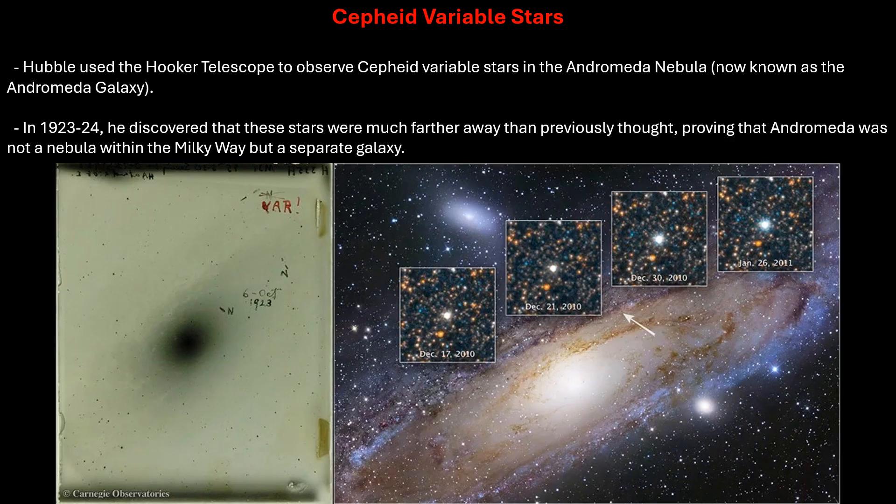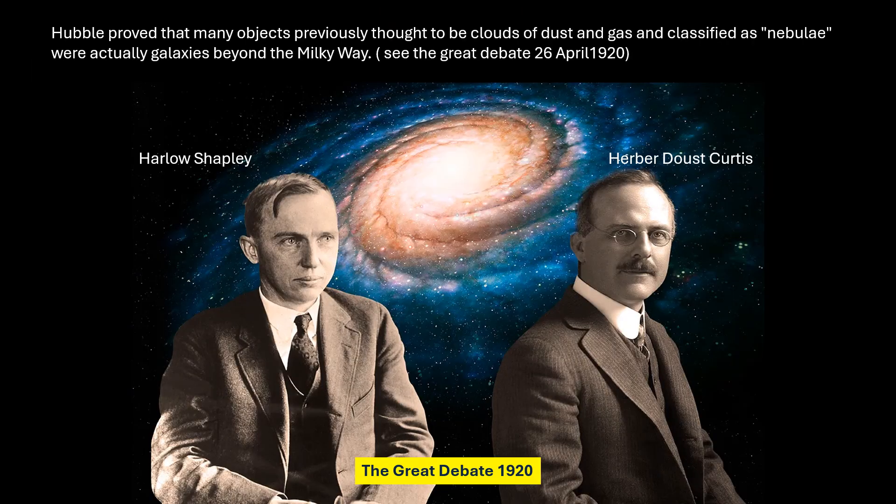Hubble used the Hooker Telescope to observe Cepheid Variable Stars in the Andromeda Nebula, now known as the Andromeda Galaxy. In 1923–24, he discovered that these stars were much further away than previously thought, proving that Andromeda was not a nebula within the Milky Way, but a separate galaxy. Hubble's findings proved that many objects previously thought to be clouds of dust and gas, classified as nebulae, were actually galaxies beyond the Milky Way.